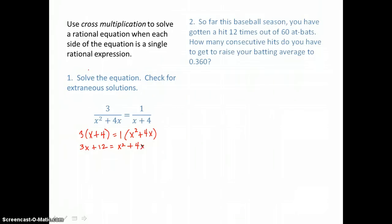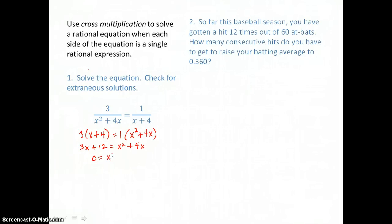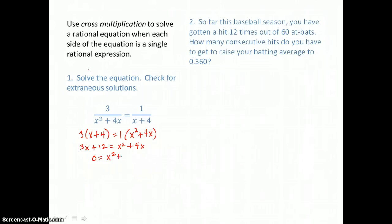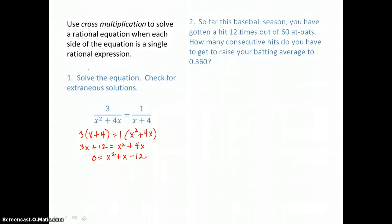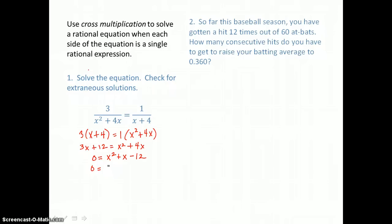This is a quadratic equation, so we want to get it in standard form. I'm going to get 0 on the left so that I keep my x squared term positive. When I subtract 3x from both sides, 4x minus 3x is 1x. And when I subtract 12 from both sides, I get this trinomial on the right that should factor into a binomial times a binomial.